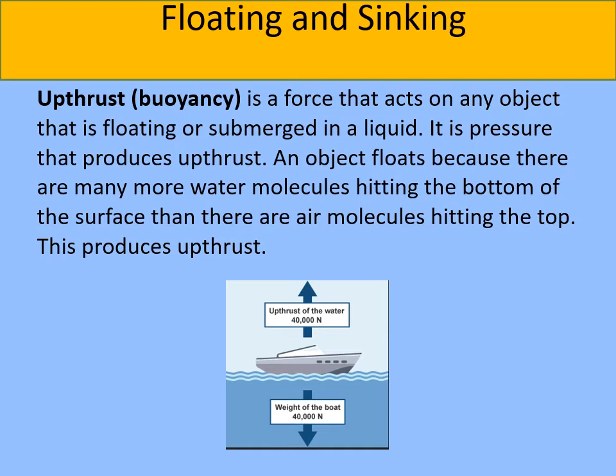If you drop an object into a liquid — say an ice cube into water — you can see the water level rises. This rise in liquid level we call displaced liquid. The upthrust is basically equal to the weight of liquid that is displaced by the object. If upthrust is bigger than the weight of the object then it floats. If upthrust is smaller than the weight of the object then it will sink. If the weight equals the upthrust then the object floats — just as in the example of the boat showing upthrust of 40,000 newtons and weight of 40,000 newtons downwards.